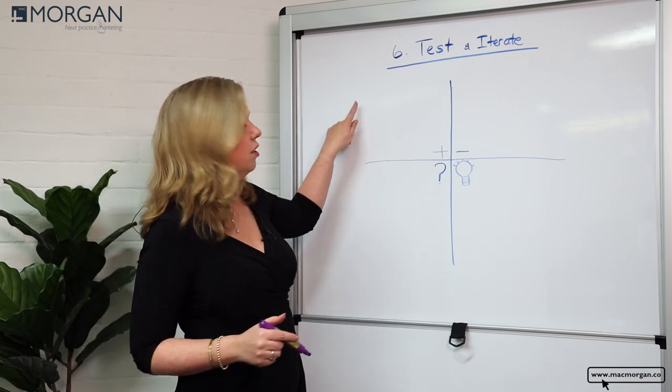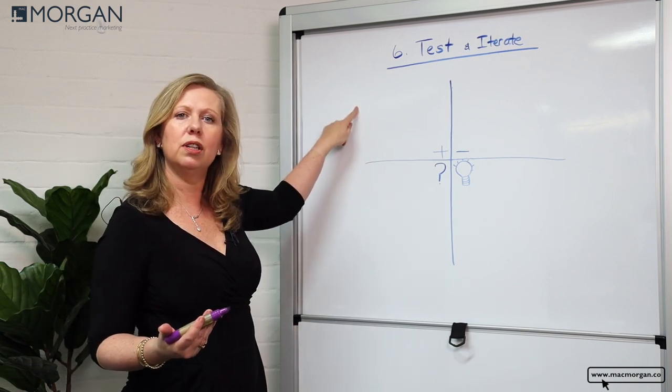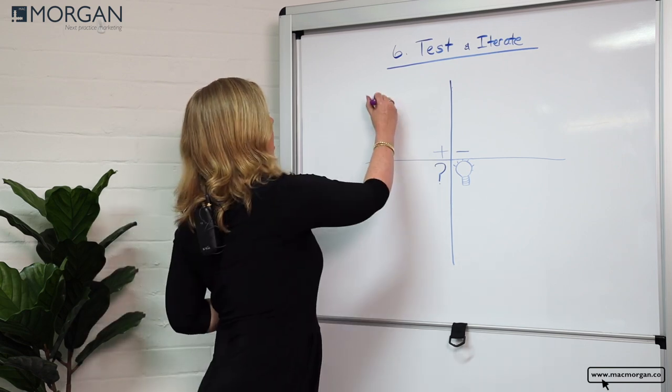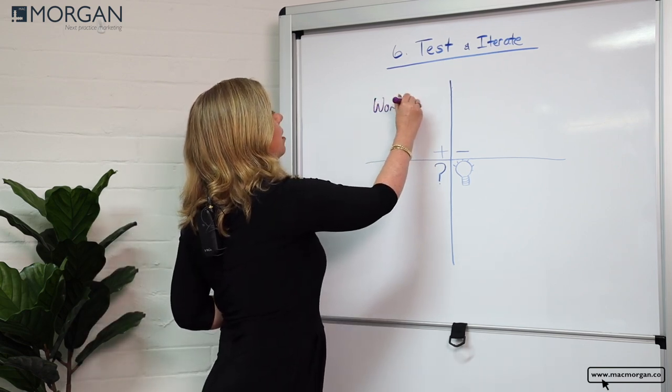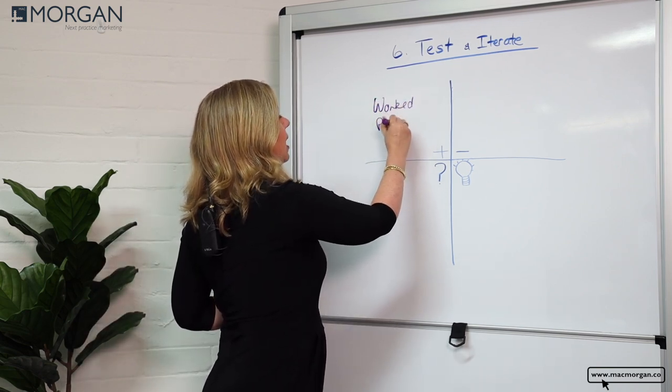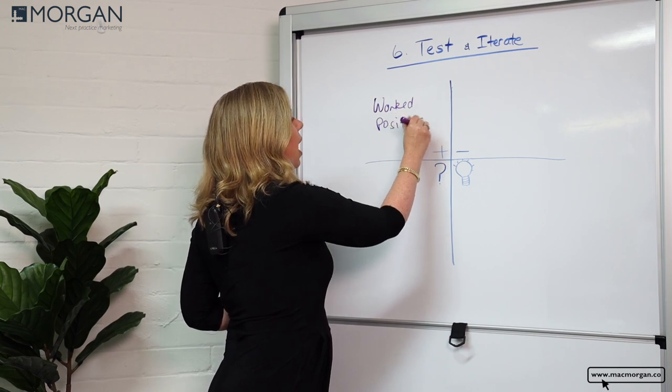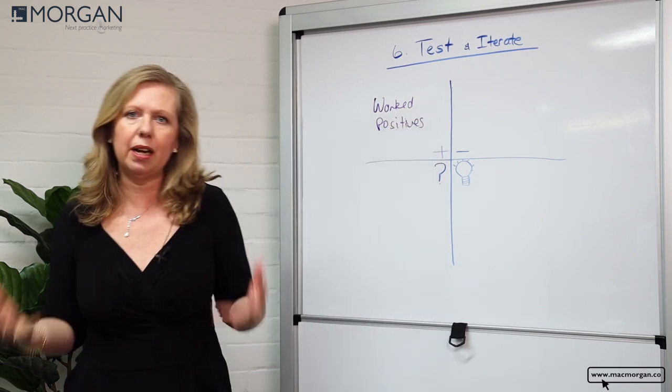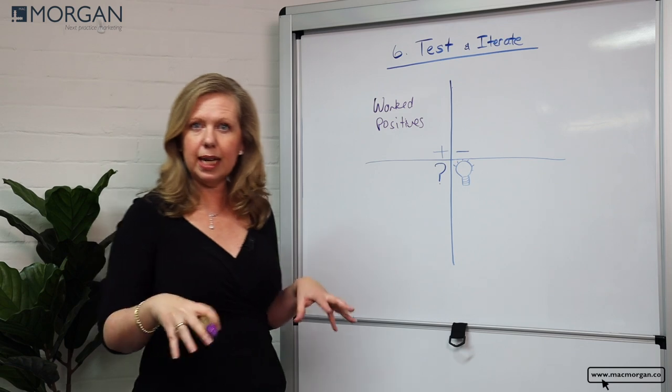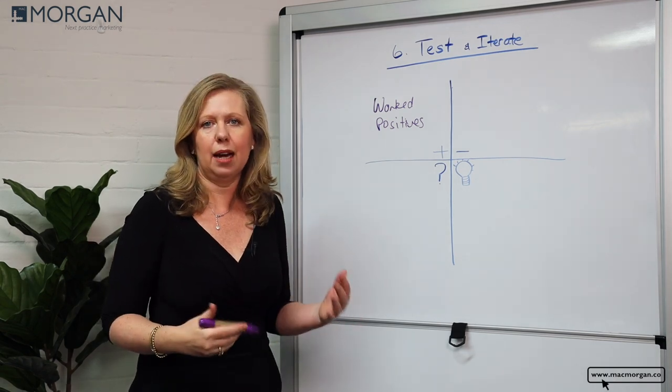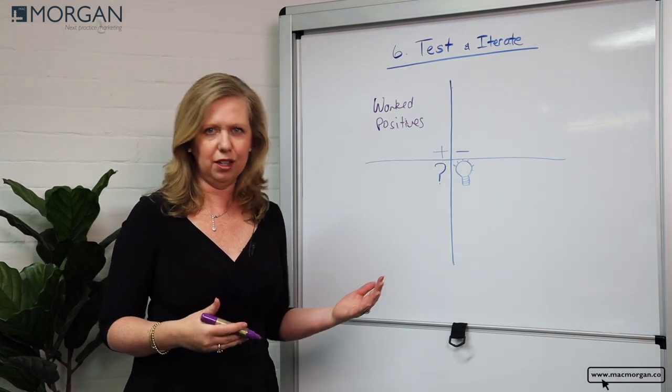So using this simple quadrant method, the first quadrant is about what has worked, what are the positives, what did they love about it, and why did they love that feature or benefit that it gave them. So really understanding why it had a positive impact and was valuable.